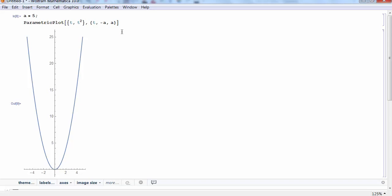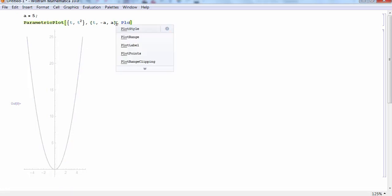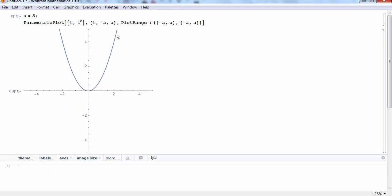Now that doesn't look very nice because I go from 0 to 25 in the y-axis, but only negative 5 to 5 in the x-axis. So I would like to fix the plot range so that it looks a little prettier. And to do that, I'll fix a range of x and y values to show my plot. I will go from negative a to a, and from negative a to a. Now I have a nice clean picture. And so this is what my plot looks like.